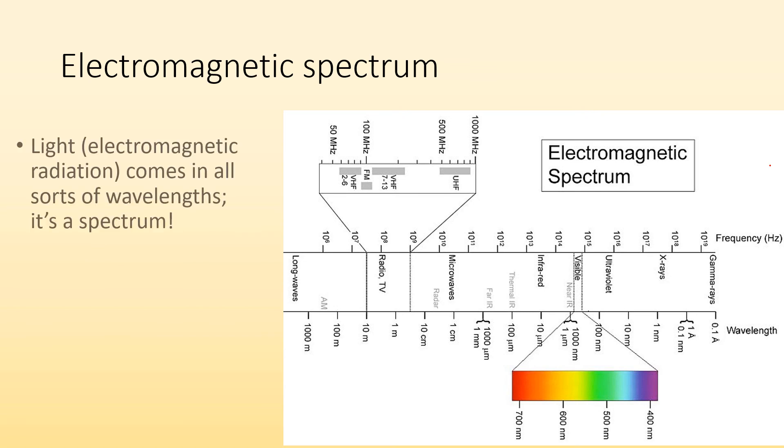So the electromagnetic spectrum, light is a whole spectrum. Electromagnetic radiation, light, it comes in all sorts of wavelengths. And the visible spectrum is just a really narrow band of the whole spectrum. So we only see a tiny portion of all the light that's out there.